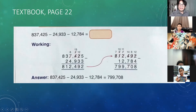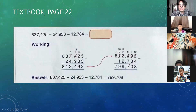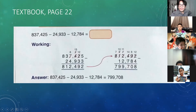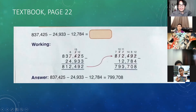4 minus 7 cannot be subtracted because 4 is smaller than 7, so 4 becomes 14 — we borrow 1 from 2, so 2 becomes 1. 14 minus 7 equals 7. 1 minus 2 cannot be subtracted — we borrow 1 from 1, so 1 becomes 0. 11 minus 2 equals 9. 0 minus 1 cannot be subtracted, so 0 becomes 10 — we borrow 1 from 8, so 8 becomes 7. 10 minus 1 equals 9. 7 minus 0 equals 7.